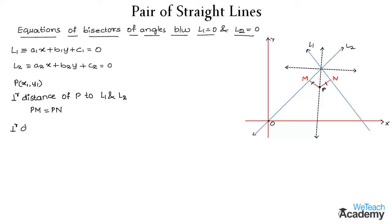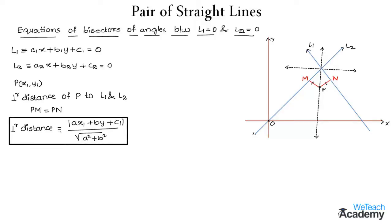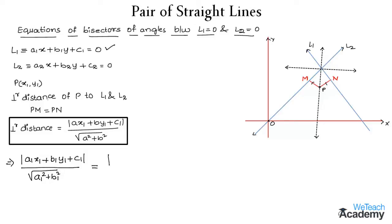Since we are using perpendicular distance, the formula is: mod(ax1 + by1 + c) divided by root(a² + b²). We use this formula to write the length of PM using line L1 and point P, giving us: |a1·x1 + b1·y1 + c1| / root(a1² + b1²) equal to |a2·x1 + b2·y1 + c2| / root(a2² + b2²).